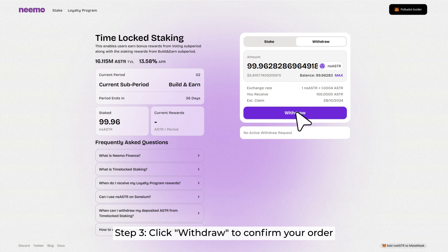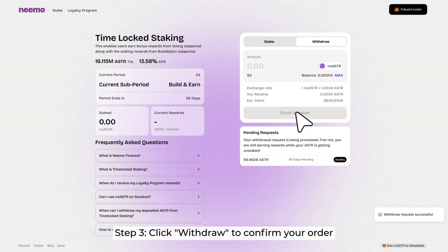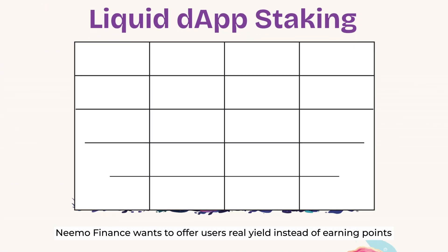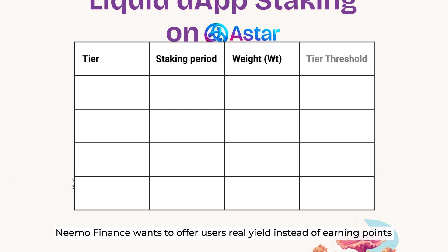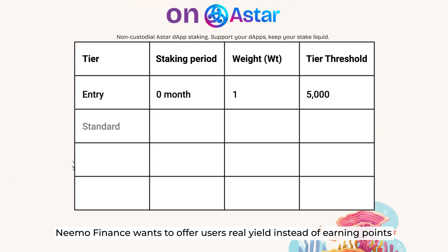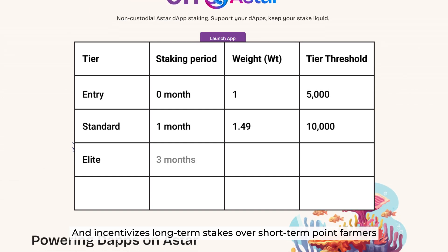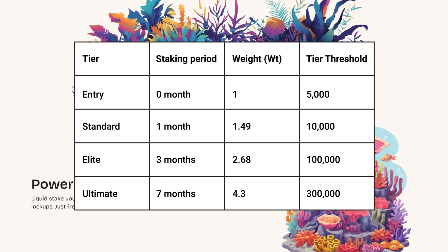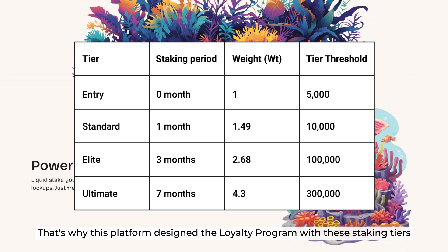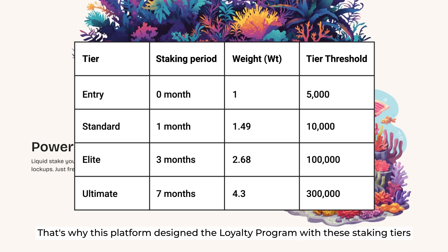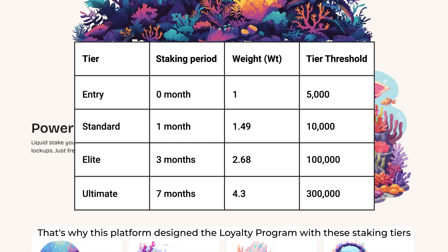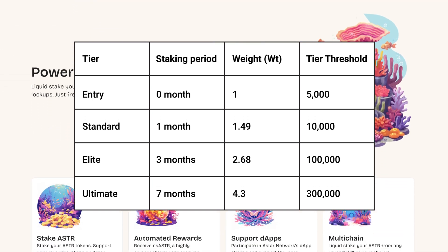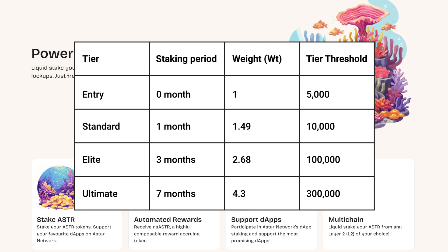Step 3: Click Withdraw to confirm your order. Nemo Finance wants to offer users real yield instead of earning points, and incentivize long-term stakers over short-term point followers. That is why this platform designed the loyalty program with tiered staking tiers. Check out the table below.